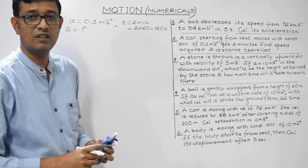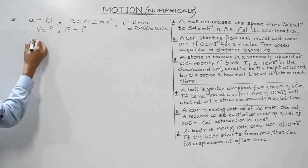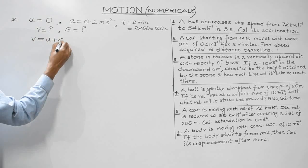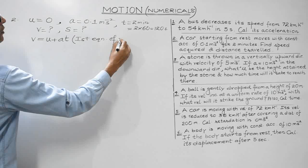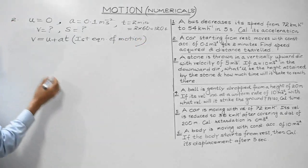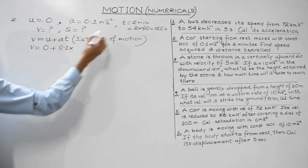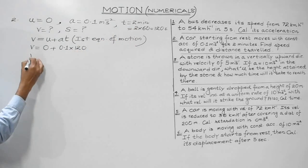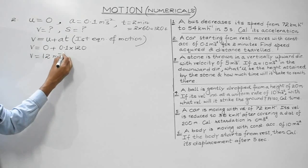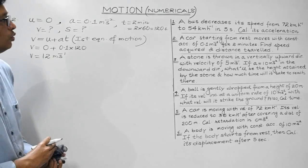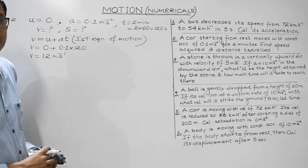Using the first equation of motion, v = u + at. U is zero, a is 0.1, t is 120. So v = 0 + 0.1 × 120 = 12 m/s. The velocity acquired by the car after 2 minutes is 12 m/s.